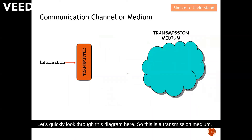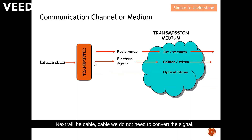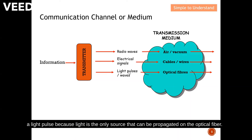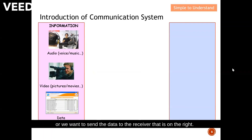Let's look at this summary diagram of transmission media. When sending through air, we convert the transmitter signal to a radio wave or EM wave before it can propagate on the transmission medium. For cable, we do not need to convert the signal — we simply send the electrical signal from transmitter to receiver. For optical fiber, we convert the electrical signal to a light pulse, since light is the only source that can propagate on optical fiber. For example, we may want to send audio, video, or data to a receiver.